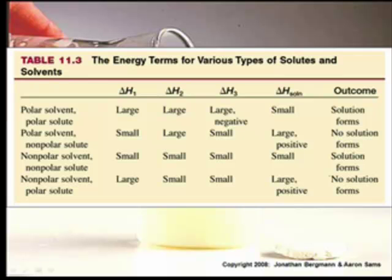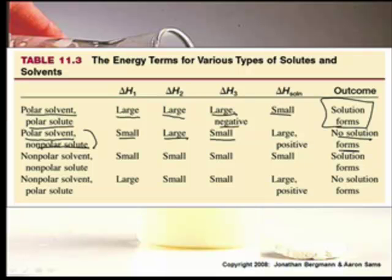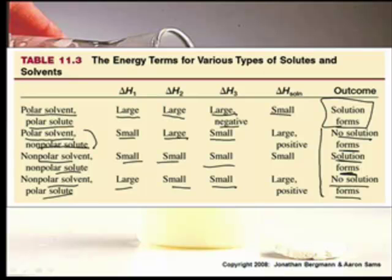All right, so now we're back to the screen, and we can see how that all works. And so, in terms of energy, if the delta H1 is large, this is a polar solvent and a polar solute, and delta H2 is large, delta H3 is a very large negative, and the heat of solution is small, and the solution will form. Now, if you have a polar solvent and a nonpolar solute, you have a small delta H1, a large delta H2, this small, and actually no solution will form in this case. That's when you take polar with a nonpolar. You might remember the like dissolves like, which we're going to talk about. And nonpolar with nonpolar, it's small, small, small, and actually you'll make a solution. And if you have a nonpolar and polar, delta H1 is large, small, small, no solution. So basically, about half of them make solutions and half of them don't. But the reason has to do with this delta H1, delta H2, and delta H3.